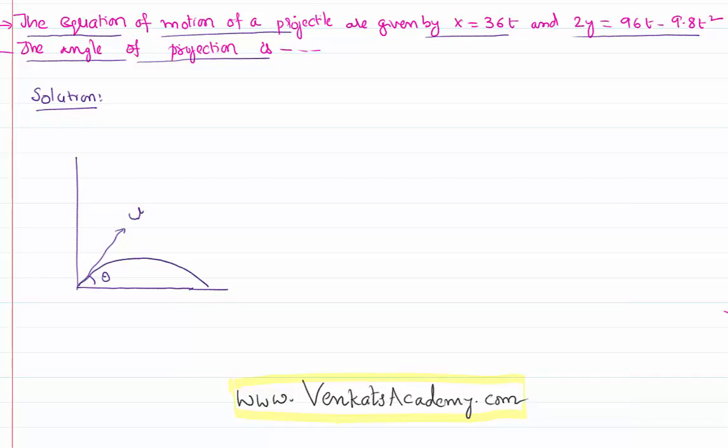Its displacement along x direction can be represented as x equal to u cos theta into t because there is no gravity effect on that because the given u is resolved into components as u cos theta along x axis and u sin theta along y axis.